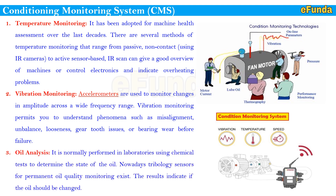Third and most critical is oil analysis, normally performed in laboratories using chemical tests to determine the state of the oil. Tribology sensors for permanent quality oil monitoring now exist. The results indicate if the oil should be changed. This technology is more focused on determining the condition of the lubricant — that is its viscosity, basicity, etc. Oil level and quality tracking are very important to prevent costly repairs. This is how condition monitoring system is used for measuring temperature, vibration, and oil analysis.